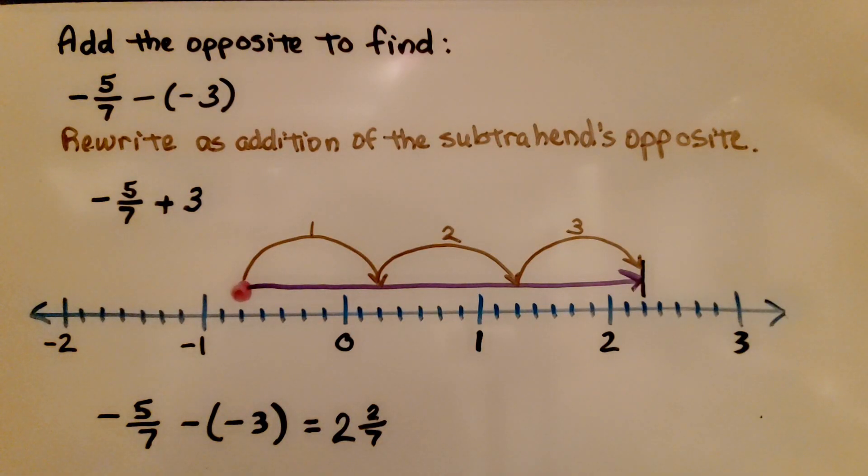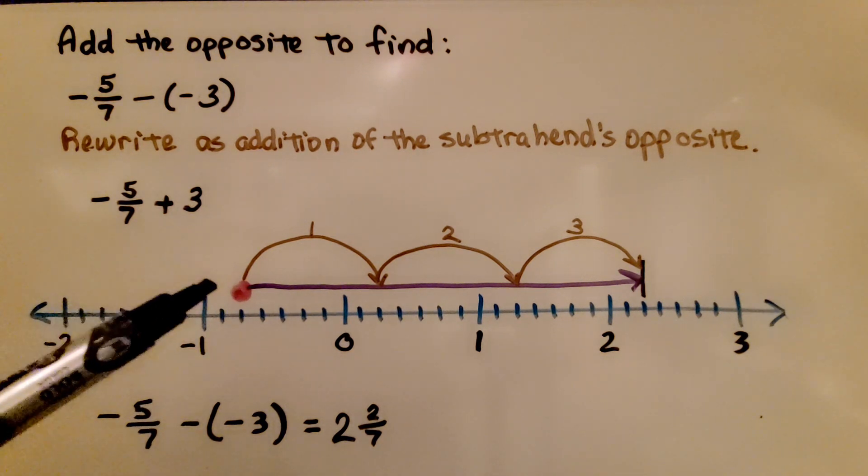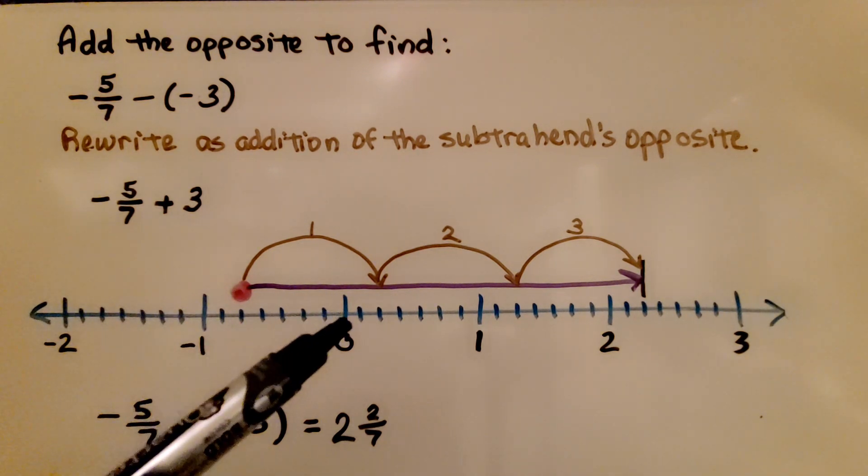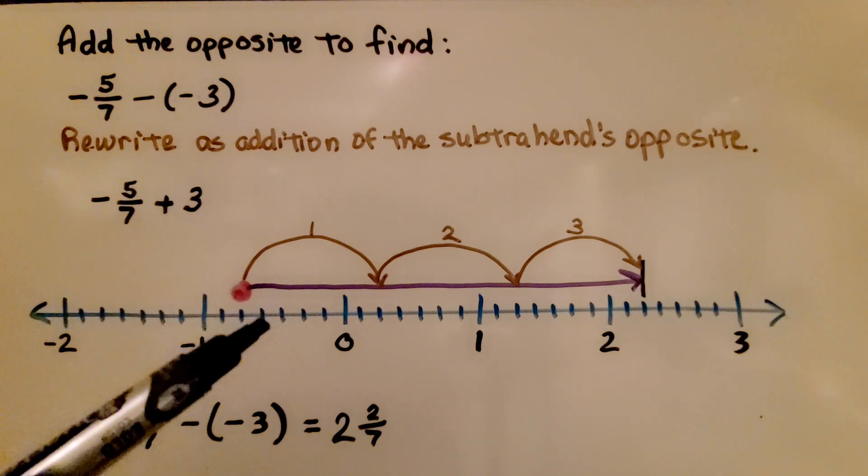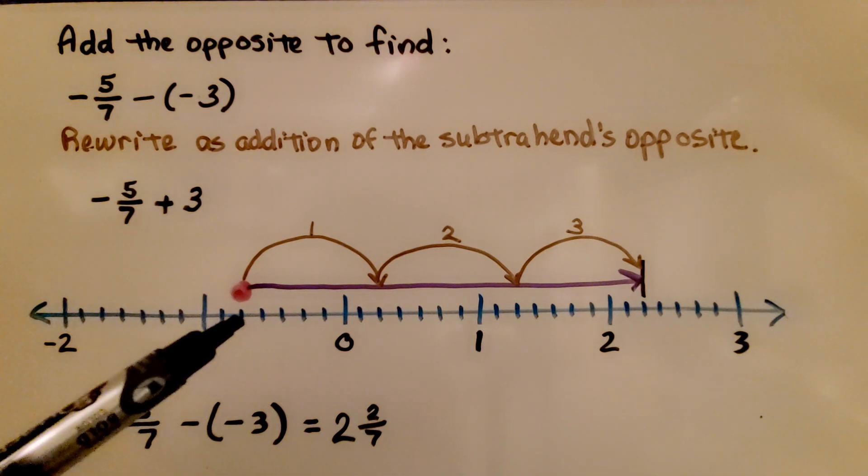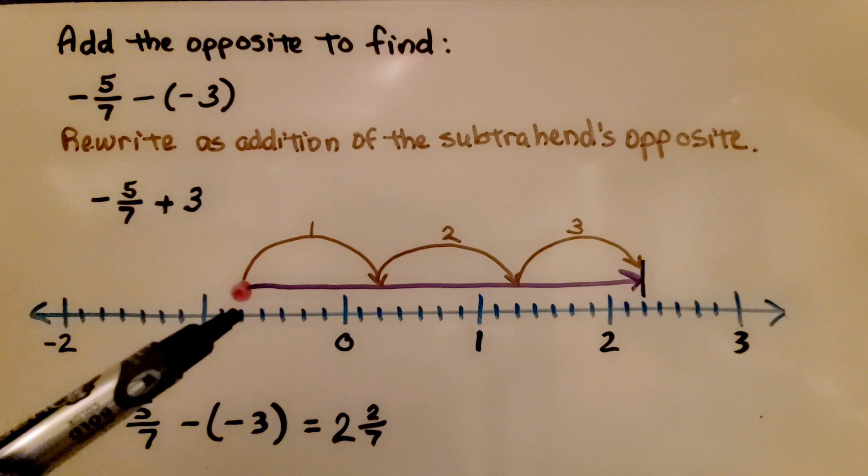Here it's telling us to add the opposite to find negative 5 sevenths minus a negative 3. We rewrite as addition of the subtrahend's opposite. So we're going to rewrite it as a negative 5 sevenths plus a positive 3. We draw a point at negative 5 sevenths. Here's 0. So we have 1, 2, 3, 4, 5 sevenths.